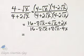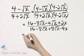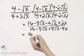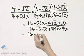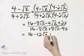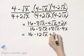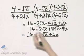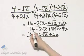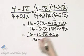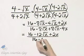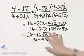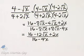Now let's simplify by combining any like terms. I have 16 minus 12 square root of x plus 2x in the numerator. In the denominator, notice I have 16 minus 4x. The middle terms subtract out.